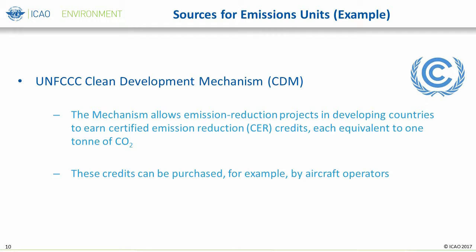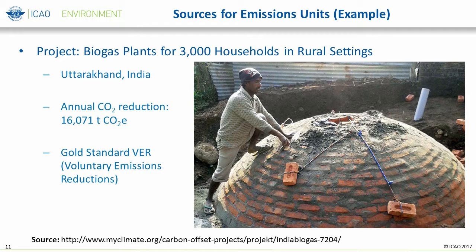This slide and the following slide provide examples of sources for emission units. The first example is the UNFCCC's Clean Development Mechanism, or CDM. This mechanism allows emission reduction projects in developing countries to earn certified emission reduction credits, each equivalent to one ton of CO2. Another example is the construction and use of biogas plants for 3,000 households in rural settings — a smaller-scale project where implementation will reduce annual CO2 emissions by 16,000 tons, compared to the baseline activity of generating energy through fossil fuels.